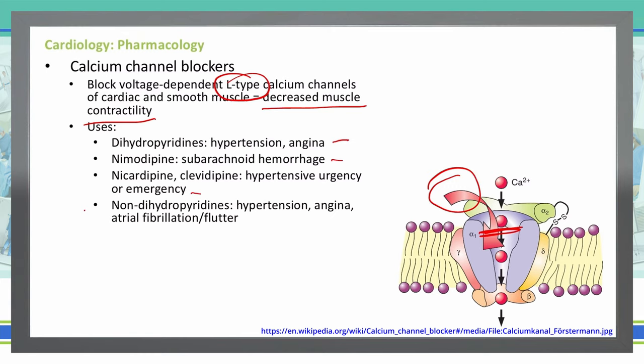Our non-dihydropyridines are used in hypertension, angina, as well as atrial fibrillation and atrial flutter. The key difference is that dihydropyridines act only on smooth muscle, while non-dihydropyridines act on the heart.